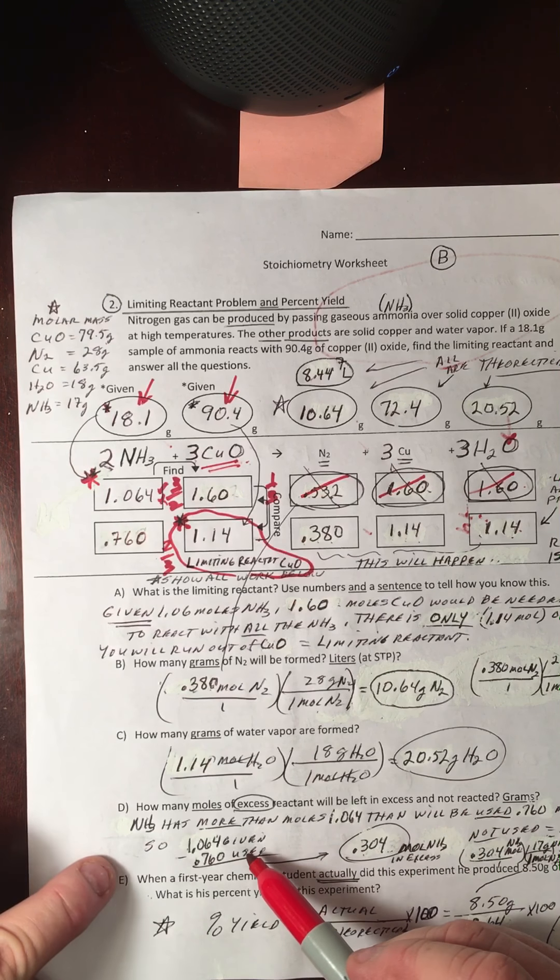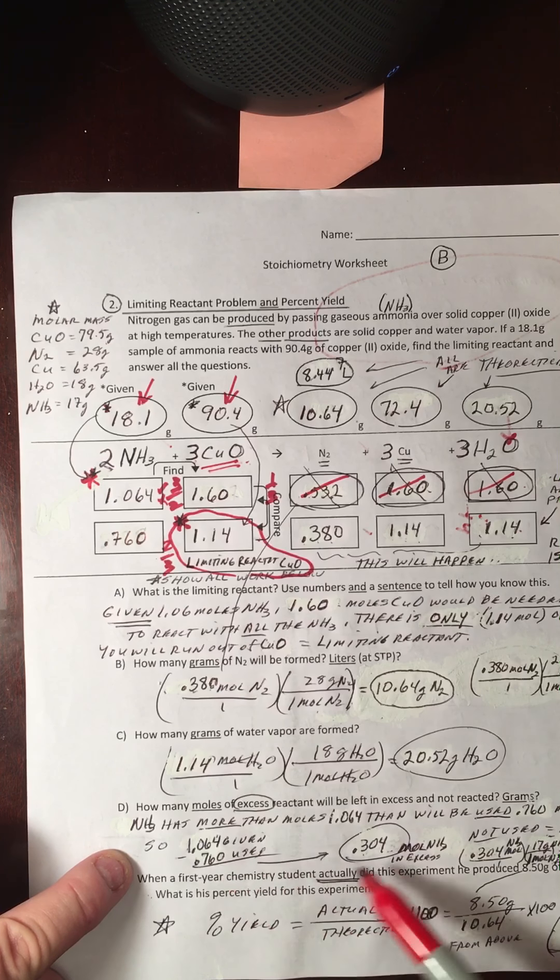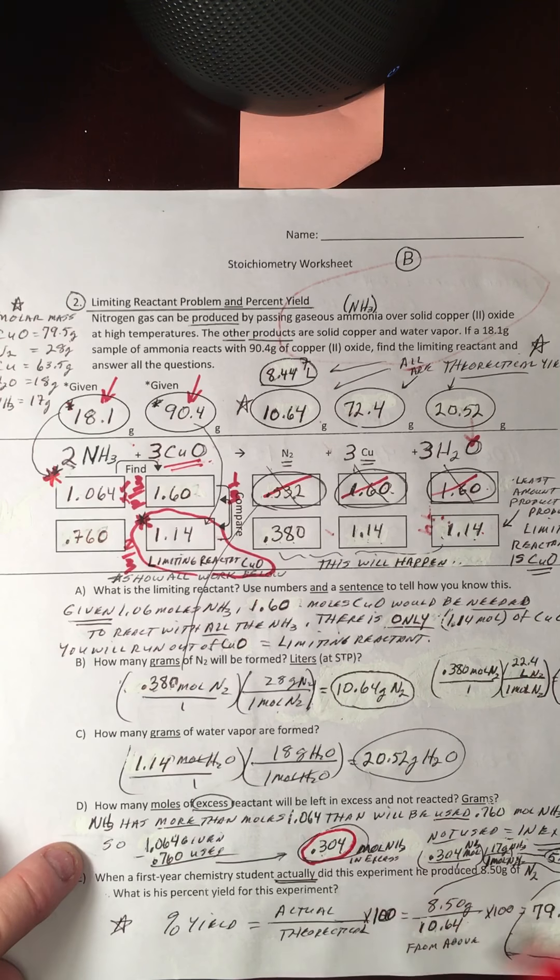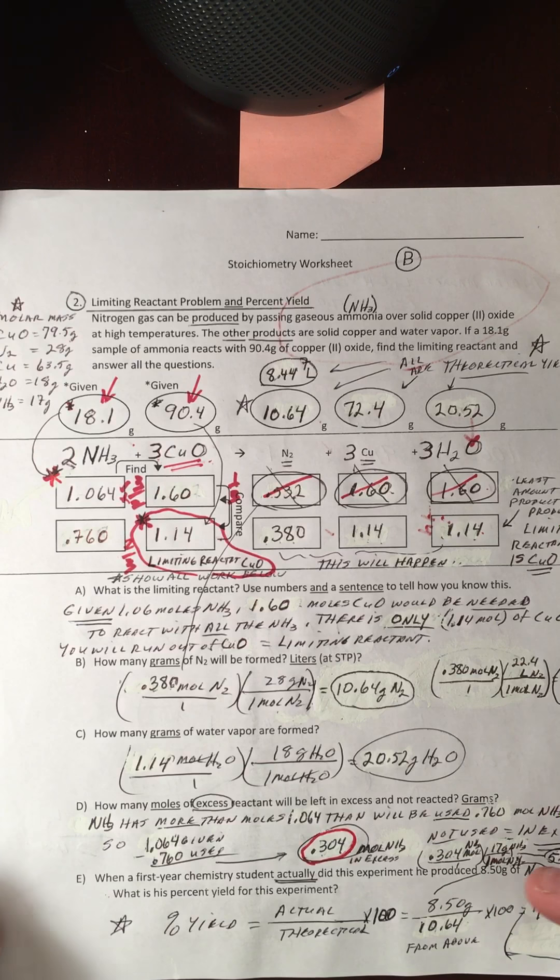So if you go down to the bottom, problem D, how much was in excess? I brought this much, I only used this much, so 0.304 moles were in excess. Now, how do you change out the grams? You're certified, so you know how to change moles of ammonia to grams. That's how you do that one.